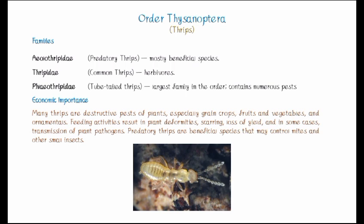Thrips cause damage through plant deformities, loss of yield, and in some cases transmission of plant pathogens. Predatory thrips, however, are beneficial species, as they control mites and small insects, helping to keep pest populations in check.